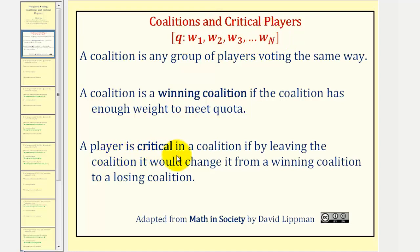A player is critical in a coalition if by leaving the coalition, it would change it from a winning coalition to a losing coalition. Let's take a look at our first example.